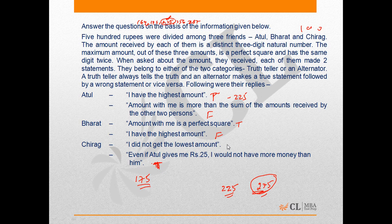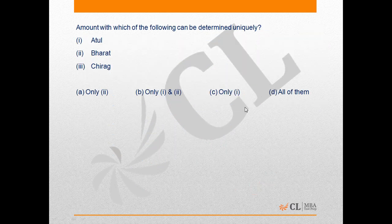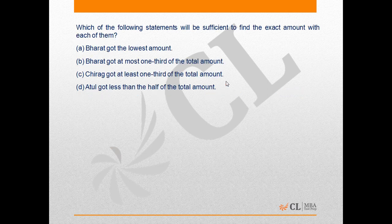Now coming to the questions. The first question asks: the amount with which of the following can be determined uniquely? We know there is only one person whose amount can be determined uniquely, and that person is Atul. Therefore, option C is the correct answer.